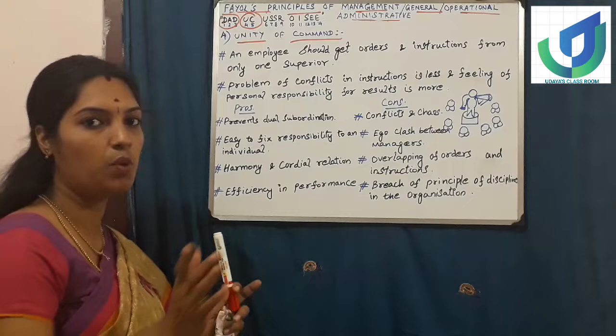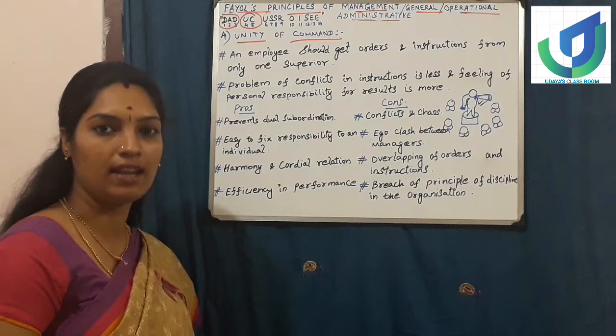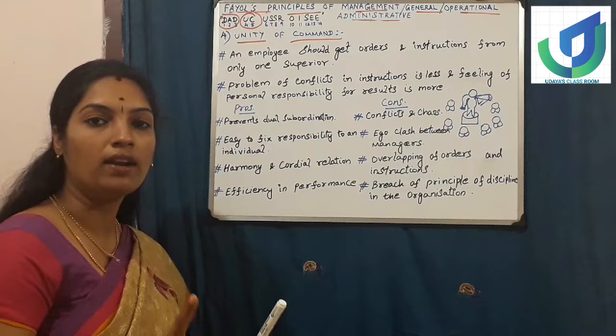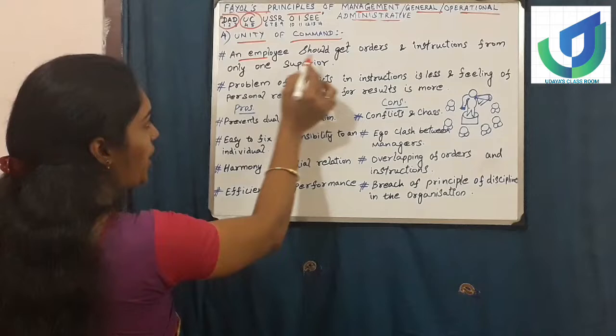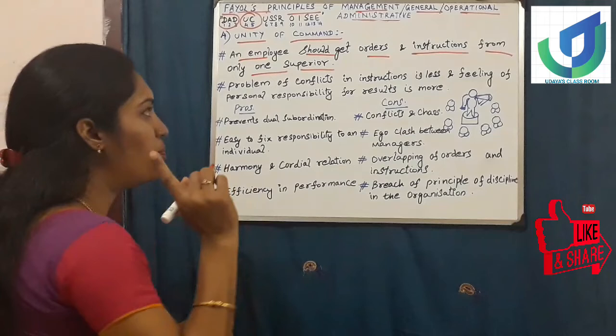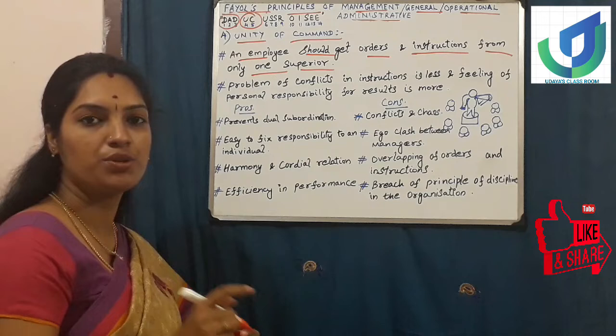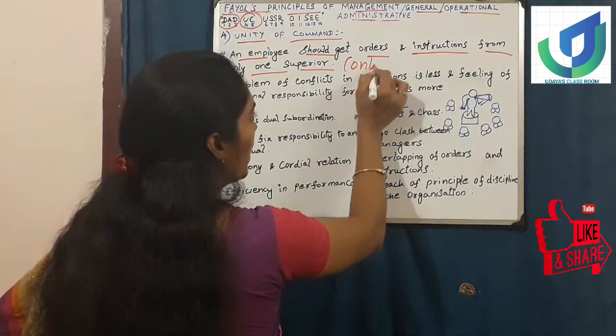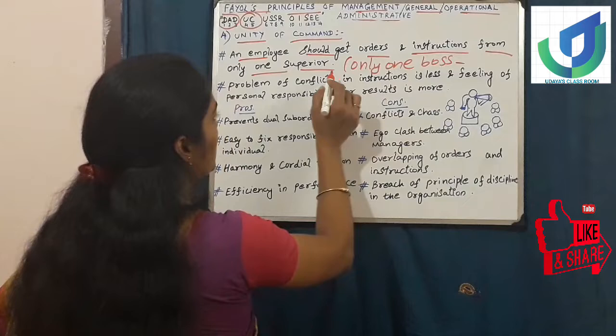Unity of command means in giving command there should be unity. Any individual employee who is working in an organization should get command from only one unit - only one boss. That is, one owner should give orders to the subordinates. An employee should get orders and instructions from only one superior.